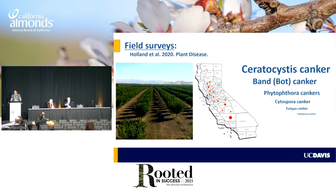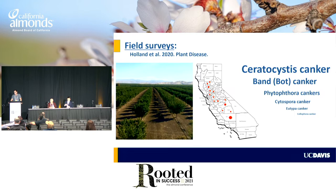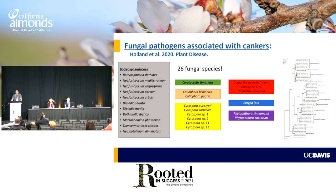We have surveyed California over the years, took hundreds of calls from colleagues, PCAs, and farm advisors, and determined the main diseases causing canker in almond. In order of importance: ceratocystis first, usually associated with shaker injury; band canker, quite widespread — Thames will go into more detail; Phytophthora canker, the aerial canker for Phytophthora, which is on the rise in California; and finally, if you're in the Sacramento Valley, you may be dealing with Eutypa dieback as well as Cytospora cankers.